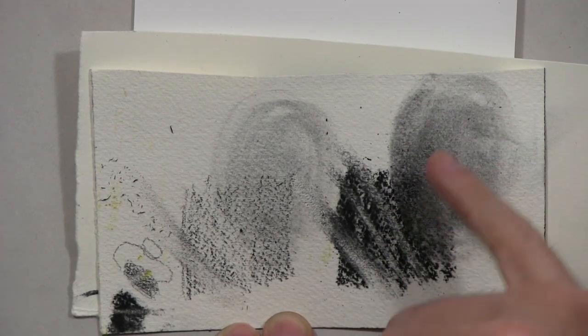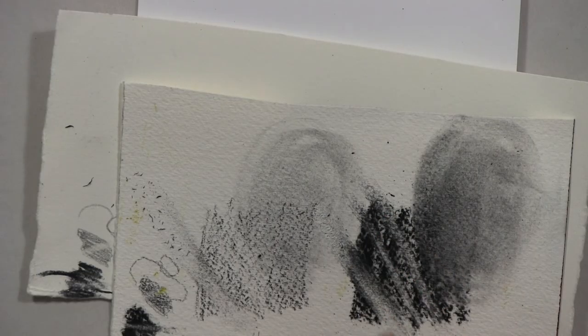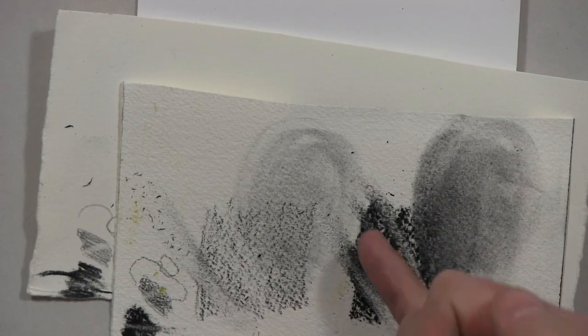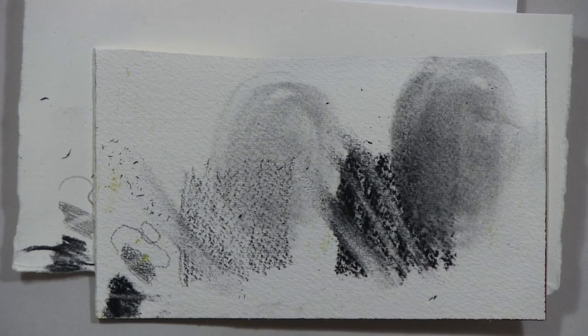That might not be too desirable for smudging. Erasing is doing a good job over in the charcoal. One nice thing about the charcoal is this paper is really rough and we can keep pushing it until we get to sort of a really deep velvety black.